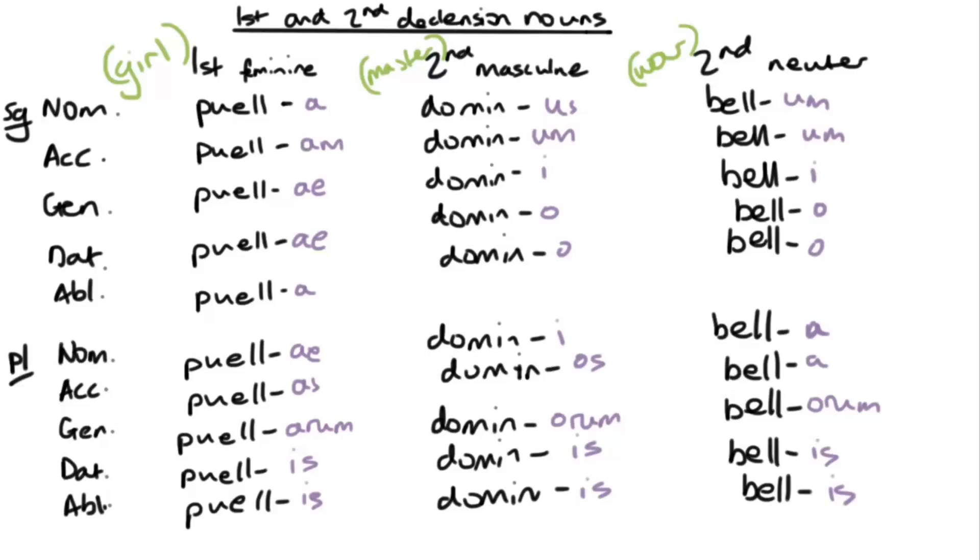Hey everybody, welcome back to another video. Today we're going to be talking about first and second declension nouns. Now we've already looked at the basic features of nouns - we looked at declension, number, gender, case, and we also talked a bit about the definite article.